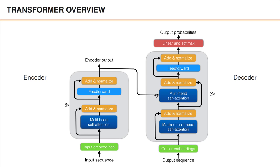Here is an illustration of the complete transformer architecture, where we have the encoder to the left and the decoder to the right. I don't expect you to understand all the details right now, but you may recall that the two main components in the encoder are the multi-head self-attention layer and the feedforward layer. Similarly, the main components in the decoder are also multi-head self-attention layers and a feedforward layer. However, the decoder actually contains two self-attention layers, and these layers are also modified slightly compared to the one in the encoder.